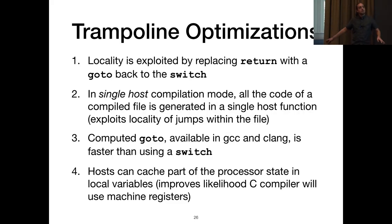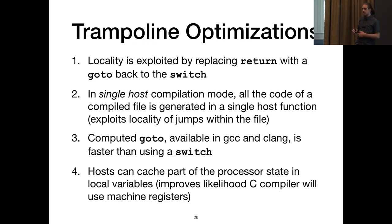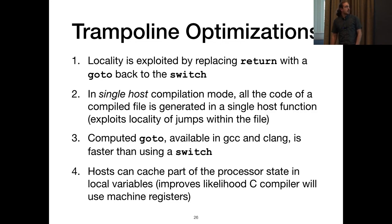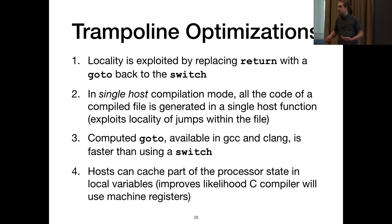This is a little simplified. There are some optimizations you can do. The first would be to jump at the start of the host function instead of returning to the trampoline, if you know the destination control point is in the same host function. Also, you could put all your control points inside the same host function to really reduce the amount of time you need to return to the trampoline. Then you can use computed go-tos and cache part of the processor state inside variables to encourage the C compiler to use machine registers.